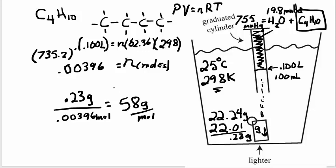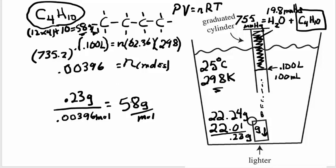And that agrees quite nicely with the formula, because C times 4 would be 12 times 4. That's 48 plus 10 is 58 grams per mole. So the formula mass right off the periodic table of butane agrees quite nicely with our experimental result.